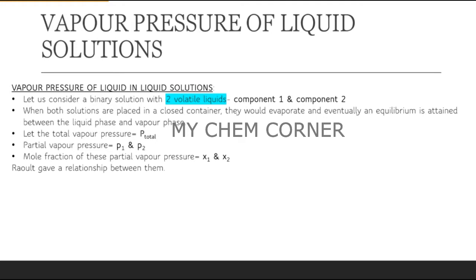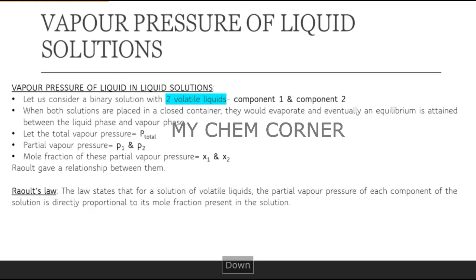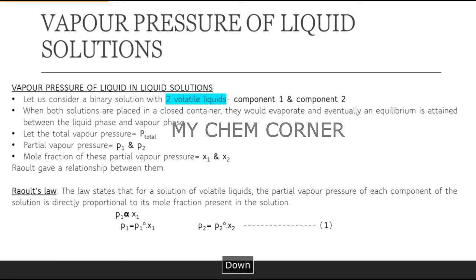It was Raoult who gave a relationship between mole fraction and vapor pressure. Based on Raoult's Law for a volatile liquid, the partial vapor pressure of each component is directly proportional to its mole fraction present in the solution — so p1 is directly proportional to x1, and p2 is directly proportional to x2.